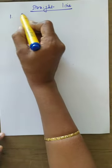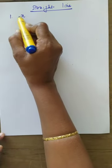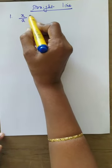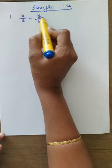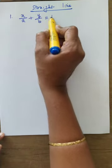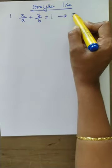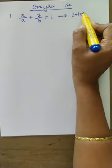Good morning students. Today's class is on the fourth form of straight line. Already we learnt three forms. First, x divided by a plus y divided by b is equal to 1, called as intercept form.